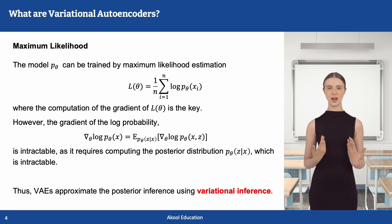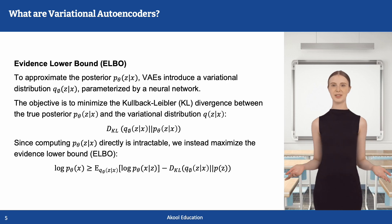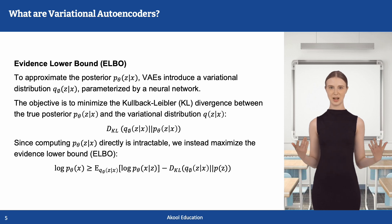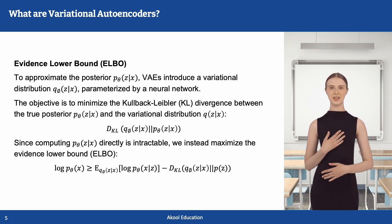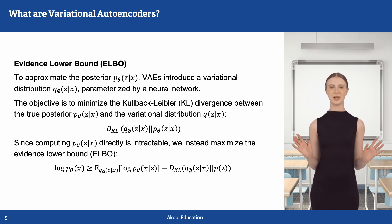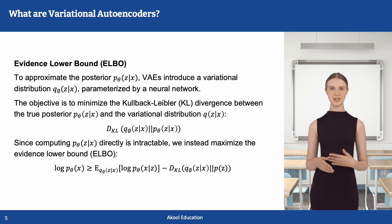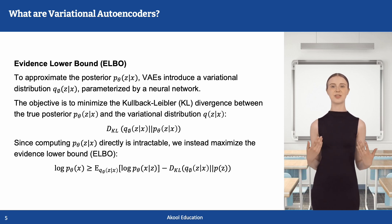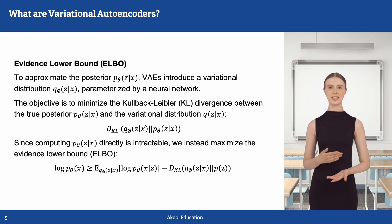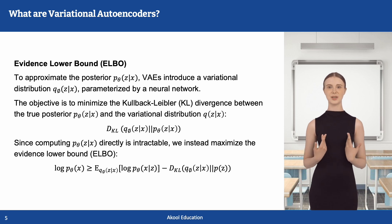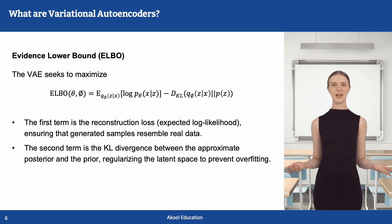Motivated by this, variational autoencoders adopt variational inference to approximate the intractable posterior. To approximate the posterior distribution of Z given X, variational autoencoders introduce a variational distribution Q of Z given X, parameterized by another trainable neural network with parameters phi. The objective is to minimize the KL divergence between the true posterior P of Z given X and the variational distribution Q of Z given X. Since computing the true posterior directly is intractable, we instead maximize the evidence lower bound, which provides a tractable lower bound on the log marginal likelihood of observed data.